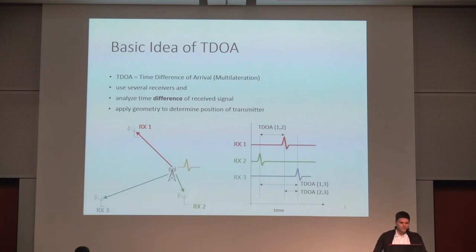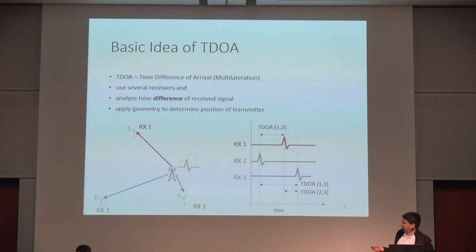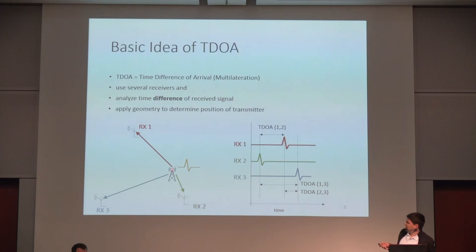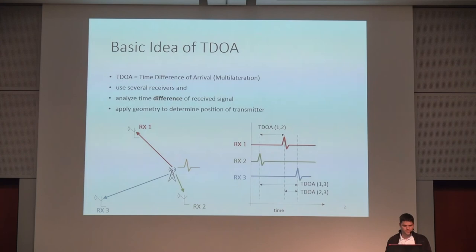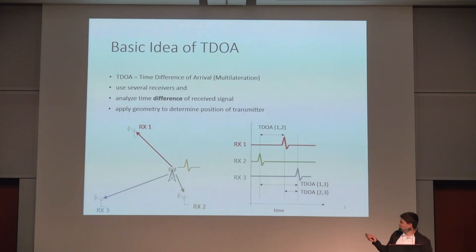So what is the basic idea? TDOA means time difference of arrival, also called multilateration. The idea is to use several receivers — we have a transmitter and several receivers — and you analyze the time difference of the received signals. The transmitter sends a signal and due to the different distance to each receiver there will be a delay in arrival, and that's exactly what TDOA analyzes to determine the position of the transmitter. We are not talking about absolute times of arrival but always about the difference of times between the receivers. Finally you can apply some geometry to determine the position of the transmitter.